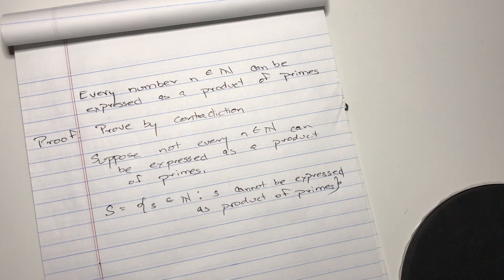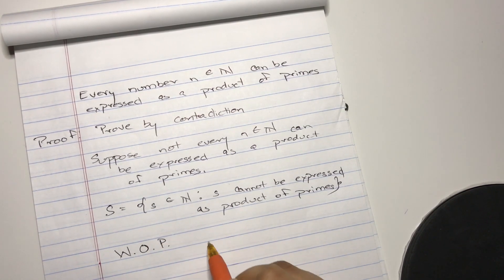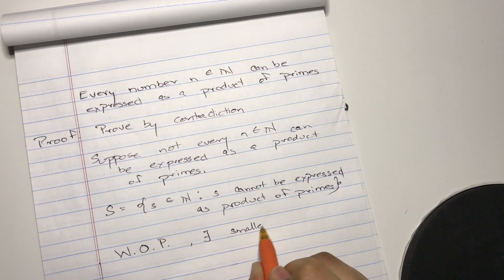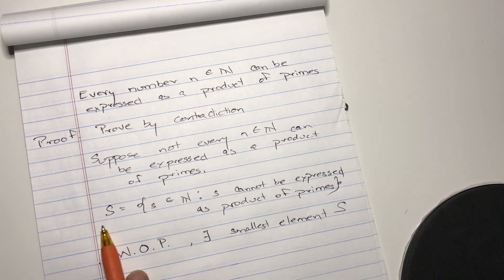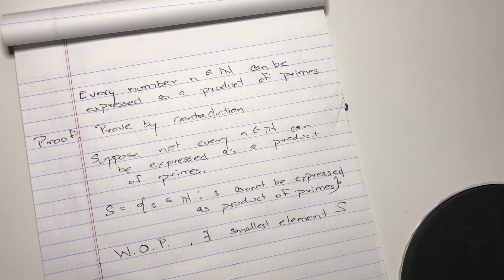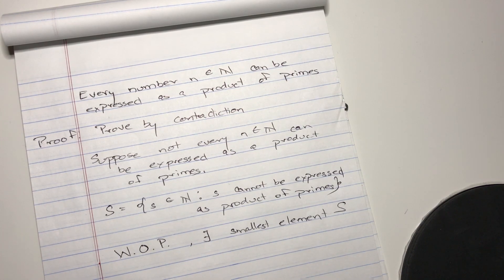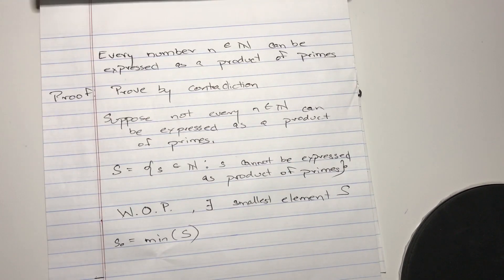According to the well-ordering principle, the WOP, there exists a smallest element of S, element of the set S because the set S is a finite set with at least a minimum number of elements. So obviously there has to be a smallest element. Let's call that smallest element S_0, the minimum of the set S. Good up until now, right?